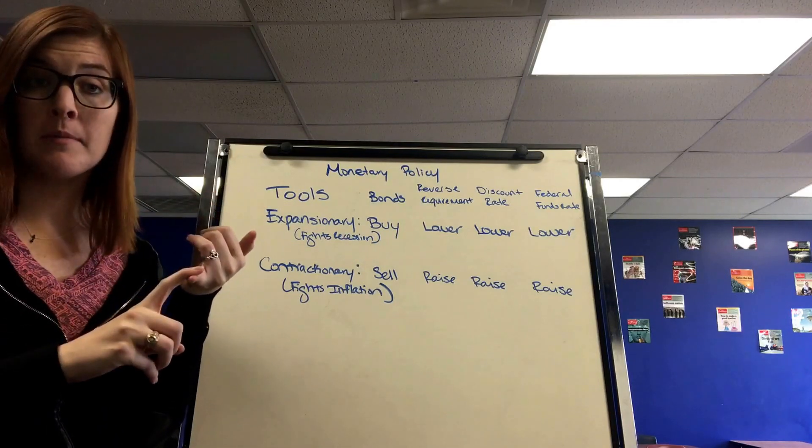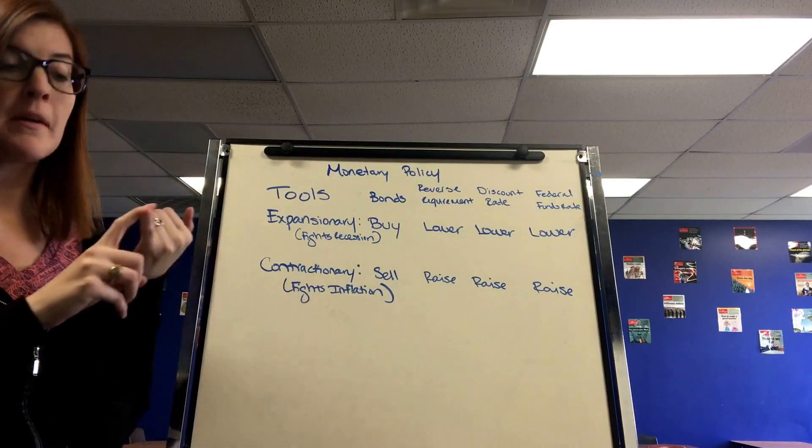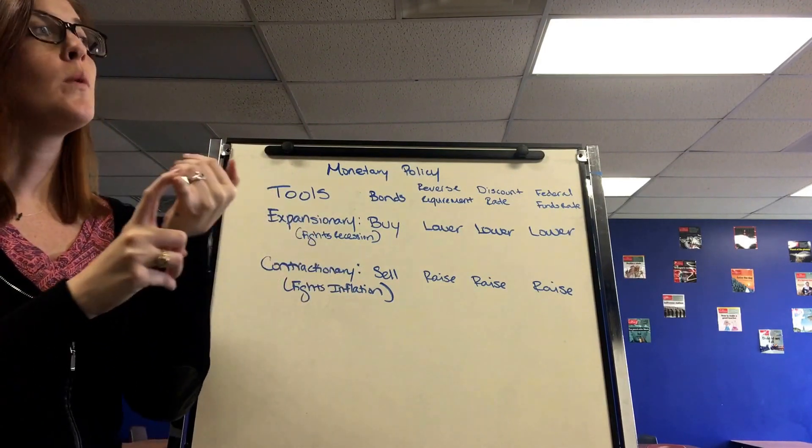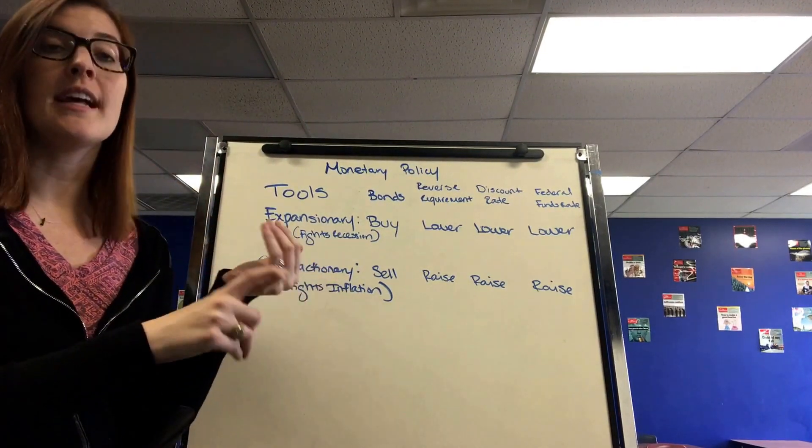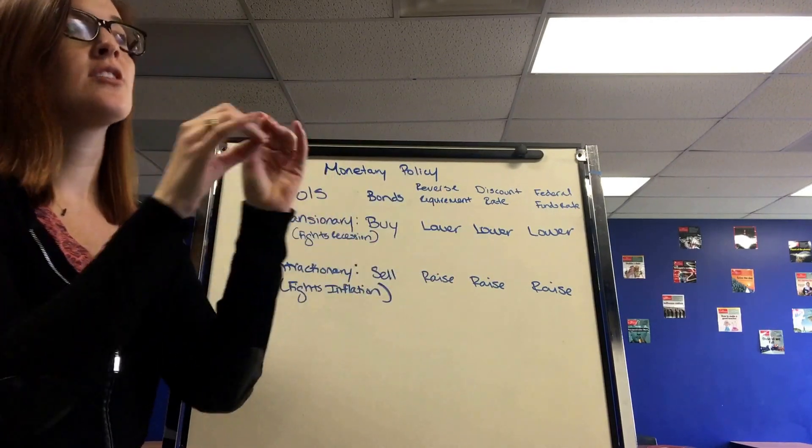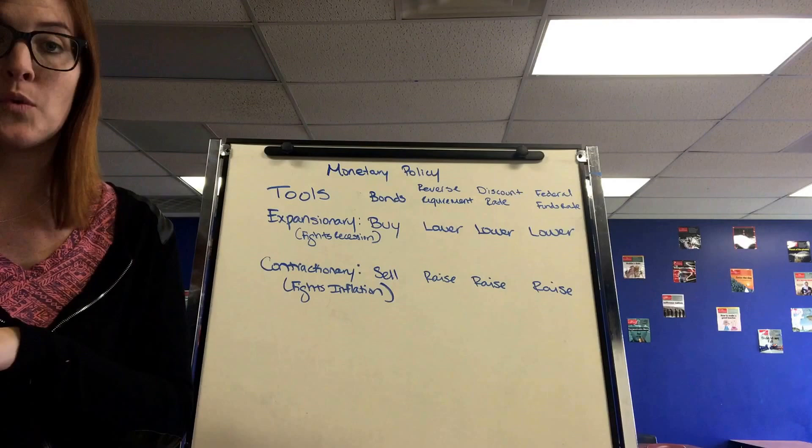We had commodity money. Commodity money is a money that is a good that also counts as a currency. We use gold and cigarettes in prison as an example. So you can use it as an actual good, but then it's also used to trade goods and services for.